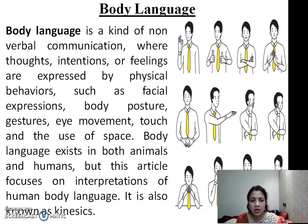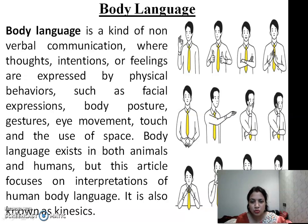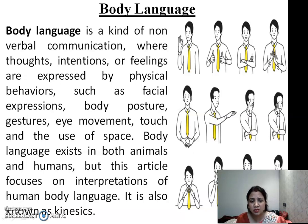Body language includes facial expressions, body postures, gestures, and eye movement. For example, when talking with small kids, if you want to make them fear you, you open your eyes as wide as possible, or you give a sweet smile to put a smile on a baby's face. This is basically the gesture and posture of body language. It is a wordless language in which moving your hands, blinking your eyes, or nodding your head communicates your message from sender to receiver. Body language exists in both animals and humans, but the focus here is on human body language.